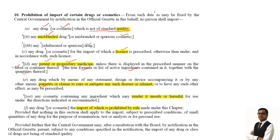Any cosmetic containing any ingredient which may render it unsafe or harmful under the directions indicated or recommended. For a particular cosmetic, it should be used as per the directions indicated or recommended. For example, if a particular product is to be used on a face and it is used on the eyes and causes a harmful effect, that won't be considered as prohibition for import. However, if a product to be used on the face is used on the face and it causes an unsafe or harmful effect, then it will be prohibited from import.